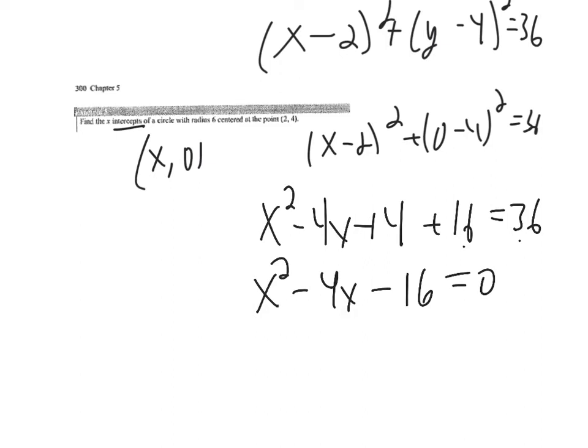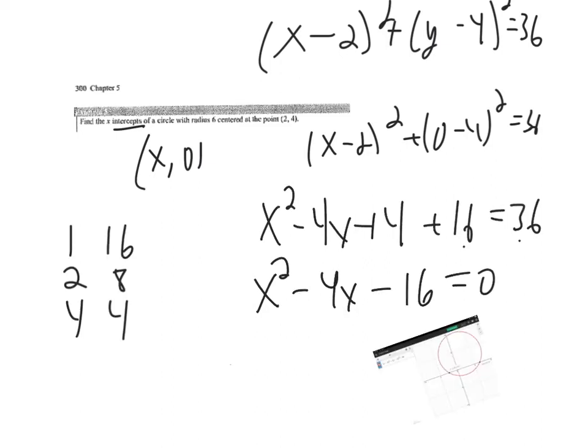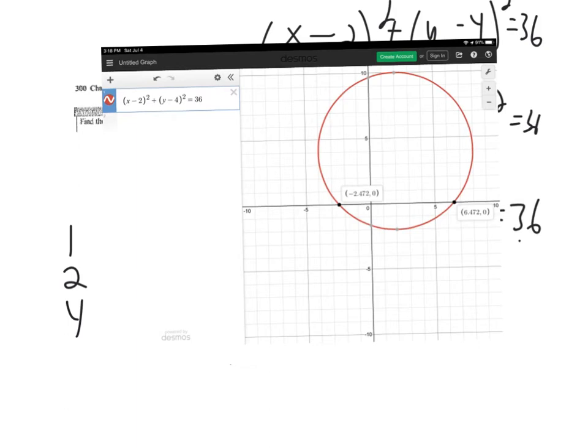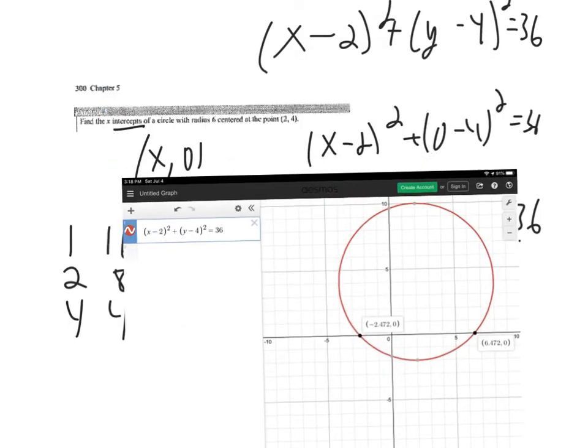I tried to factor this — looking at factors of negative 16 that add to negative 4 — and it's not going to factor. I opened Desmos and graphed the equation; sure enough there are two irrational values. So we need to use the quadratic formula.